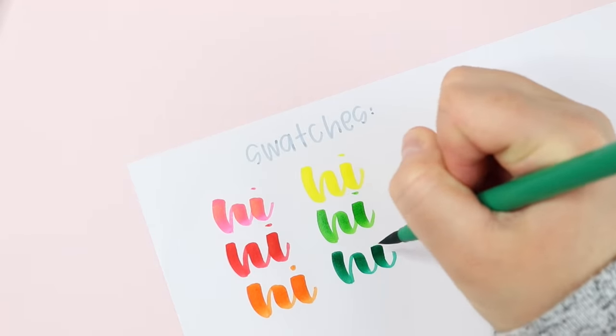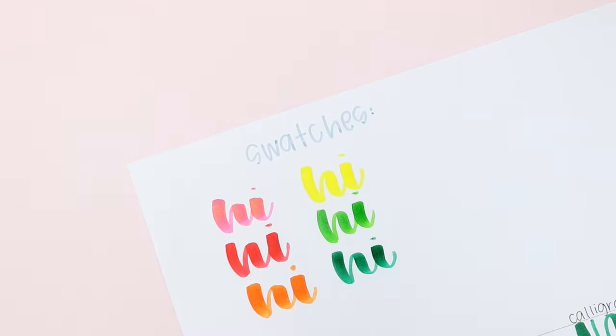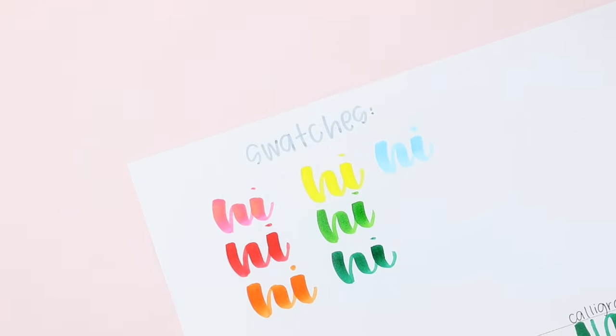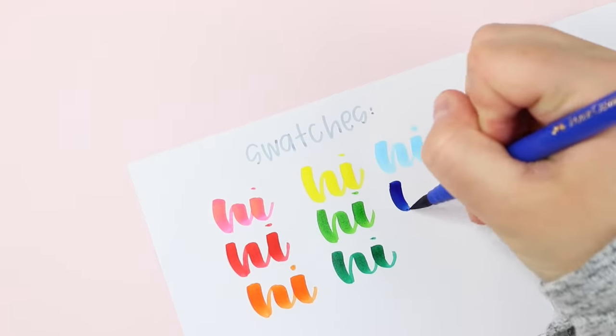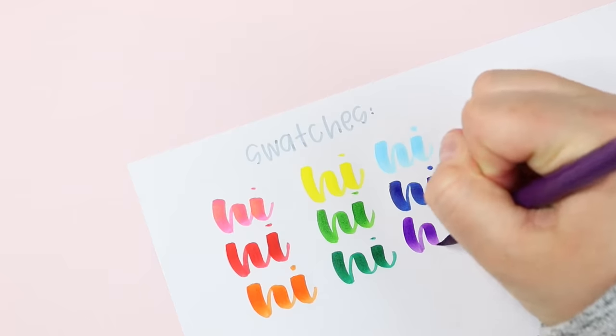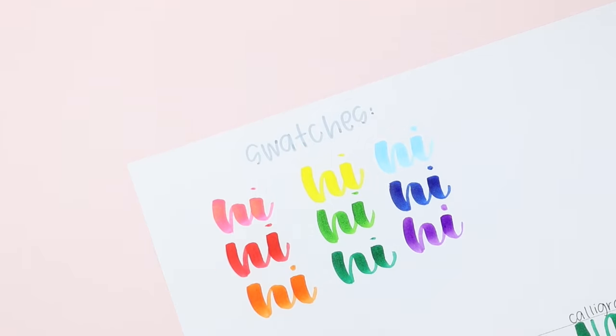I highly recommend either using a really smooth copy paper or a marker paper. I have a whole page on my website about paper so if you're interested in that you can go to howtohandletter.com/paper but I just wanted to point that out in case you have tried these and yours don't look quite as vibrant it could be the paper that I'm using.